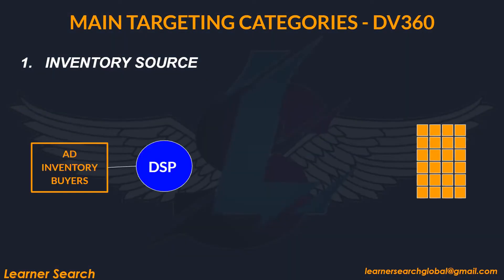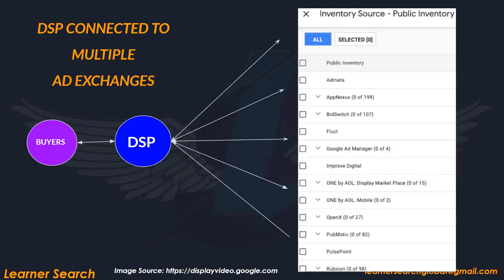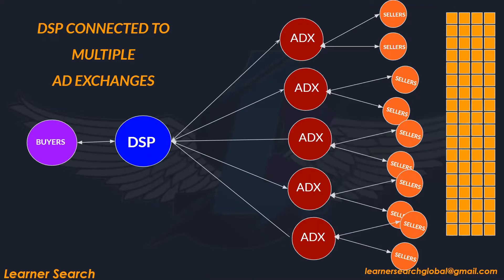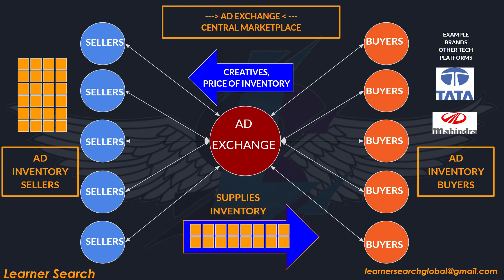Inventory source targeting: ad inventory buyers purchase inventory from publishers or sellers. To do that, they connect to the demand side platform, and the DSP connects to ad exchanges. DSPs connect to multiple ad exchanges like AppNexus, Google Ad Manager, OpenNex, Pubmatic, PulsePoint, Rubicon, etc. These ad exchanges connect to sellers on the other end to get the inventory. Ad exchanges are the inventory source — a central marketplace connecting both buyers and sellers.